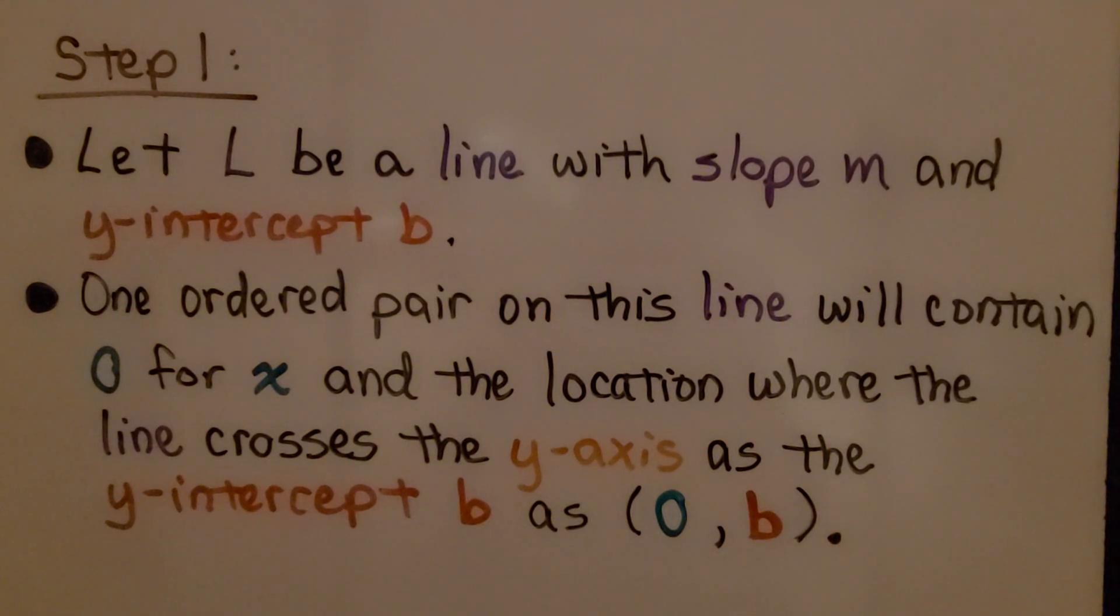So, the first thing we're going to do, step one, is we're going to let L be a line with slope m and y-intercept b. One ordered pair on this line will contain zero for x and the location where the line crosses the y-axis as the y-intercept b as (0,b). That'll be our ordered pair.